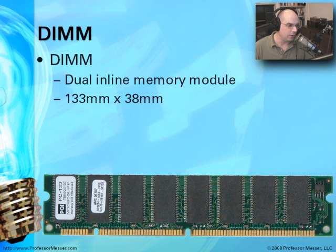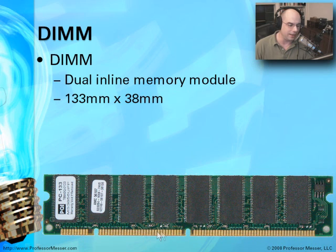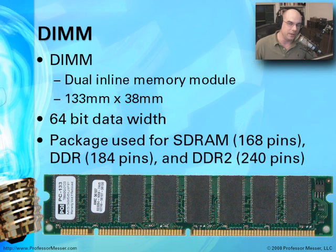This is a DIMM — Dual Inline Memory Module — and they're about 133 millimeters by 38 millimeters. It's a very standard type of memory module these days. It's called Dual Inline because we're looking at one side, and you can see the tiny gold pins at the bottom that go into the memory slot on our motherboard. There's also a duplicate set on the other side, but they're not connected to each other — each side is completely separate. This has a 64-bit bandwidth, making it an 8-byte data width memory module, very efficient for 32- and 64-bit processors.